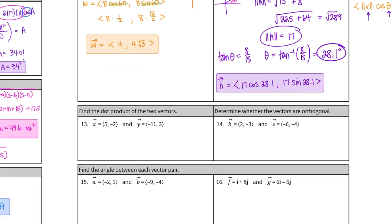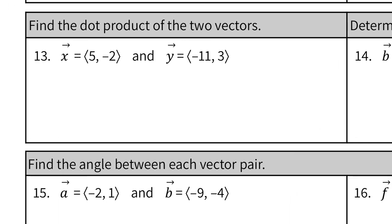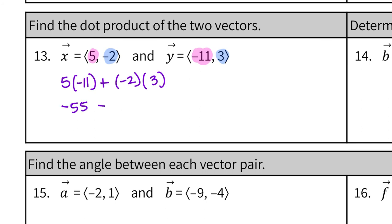For vector H at (15, 8): it's in quadrant one since both are positive. For magnitude: square root of 15 squared plus 8 squared equals square root of 225 plus 64 equals square root of 289, which is 17. For the direction angle: tangent theta equals y over x equals 8 over 15, so theta equals tan inverse of 8 over 15, which gives 28.1 degrees. Putting it together: vector H equals 17 cosine 28.1 comma 17 sine 28.1.